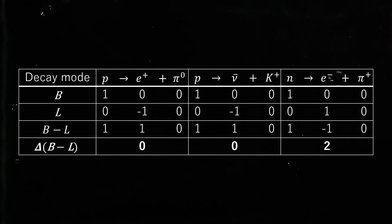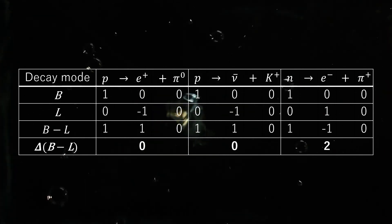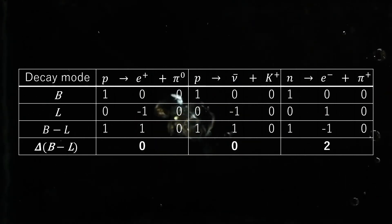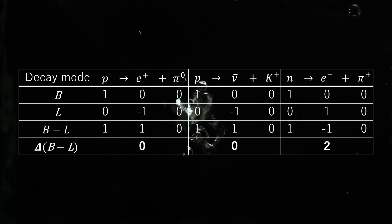Second, there are neutron-anti-neutron oscillations, which are induced by delta B equals two dimension nine effective operators in the standard model.